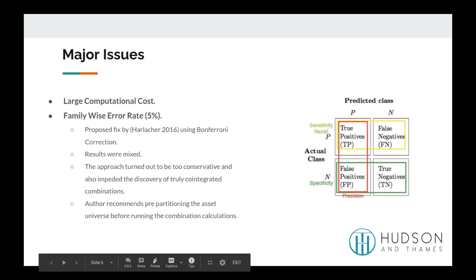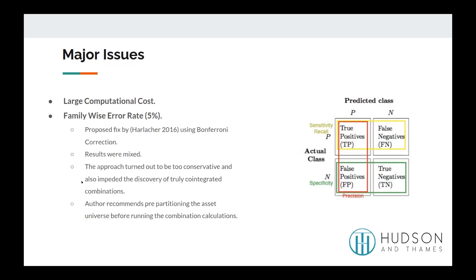The first major issue with the classical approach is obviously performance. Running statistical tests on hundreds of thousands of pair combinations is very computationally heavy. There's also the family-wise error rate: when you run a large amount of hypothesis tests, you will expect a certain amount of type 1 errors or false discoveries. This issue was tackled by Harlecher using the Bonferroni correction, but results were mixed. The approach turned out to be too conservative — it did detect spurious relationships, but also removed a significant amount of valid pairs. The author ultimately recommends pre-partitioning the asset universe before running statistical tests.